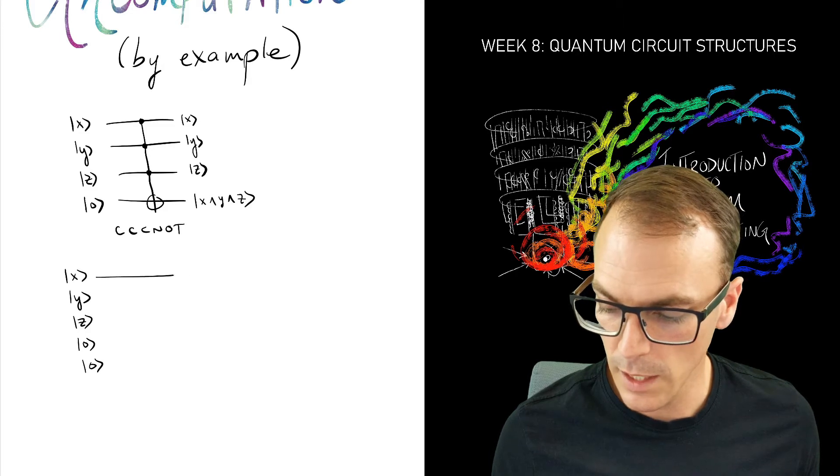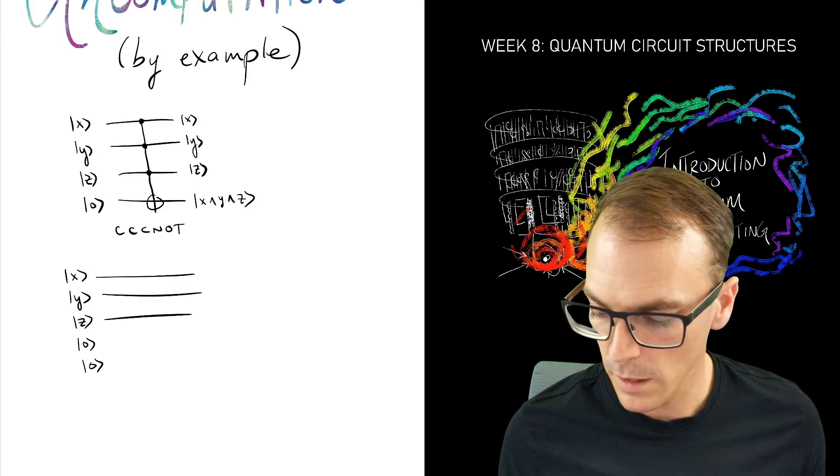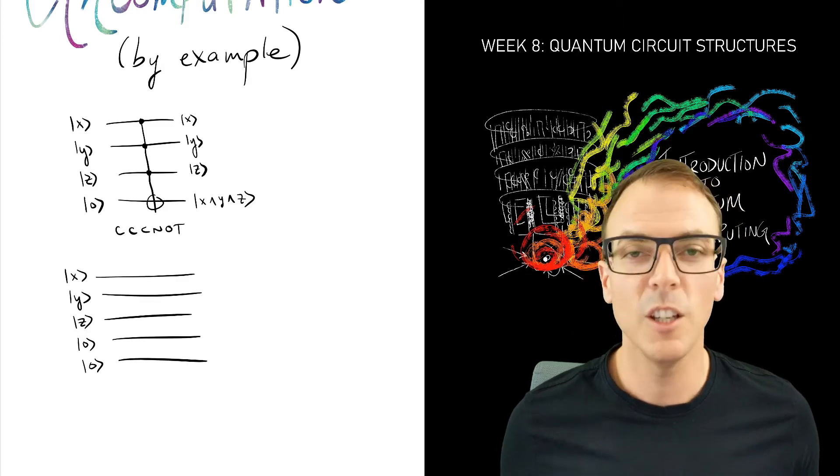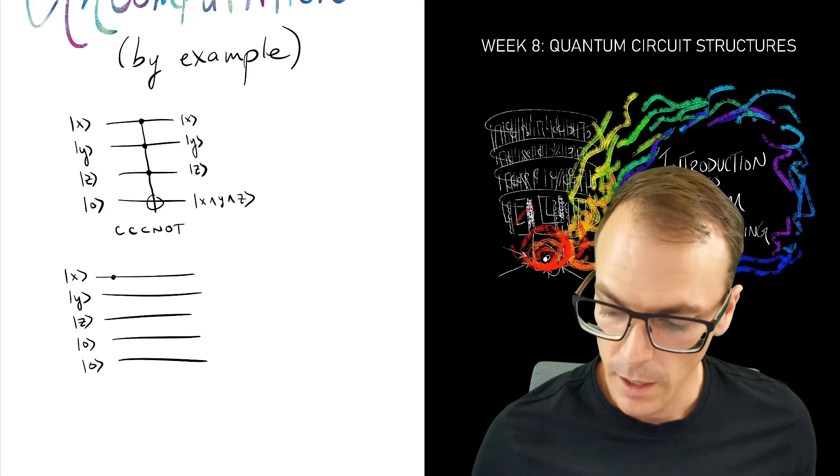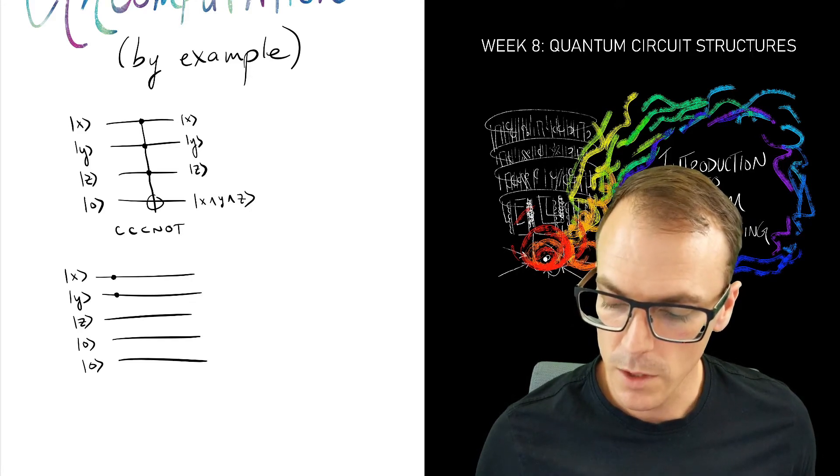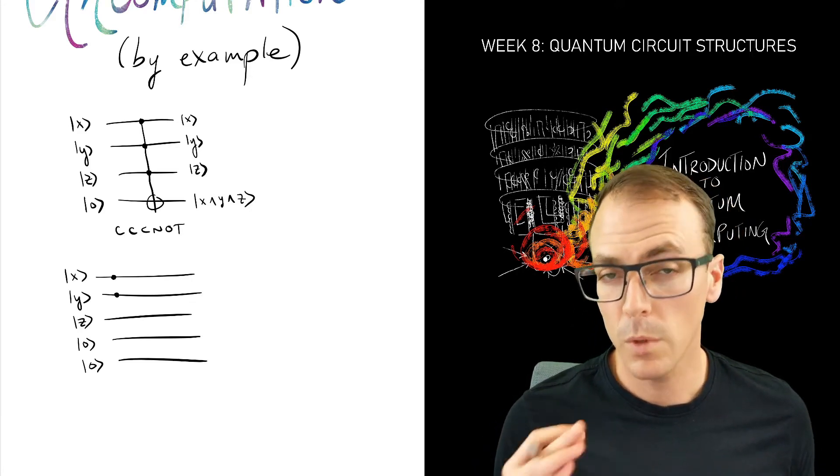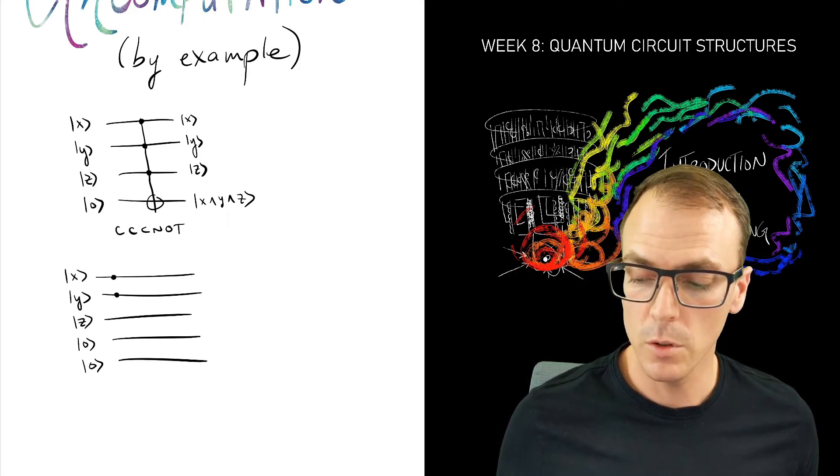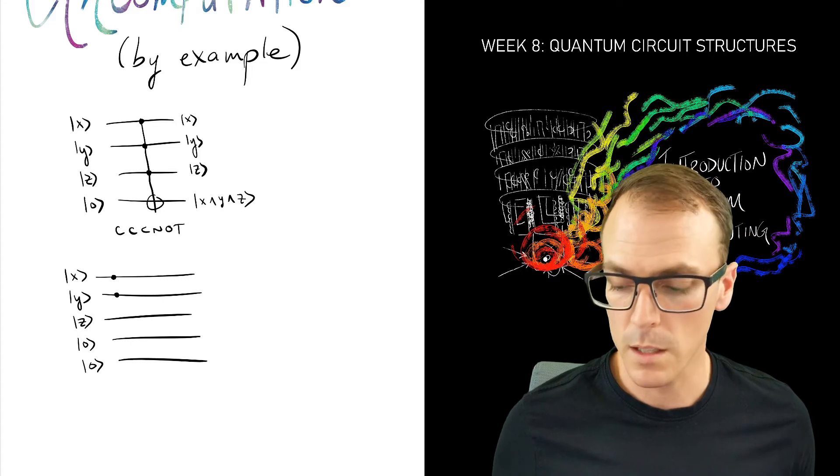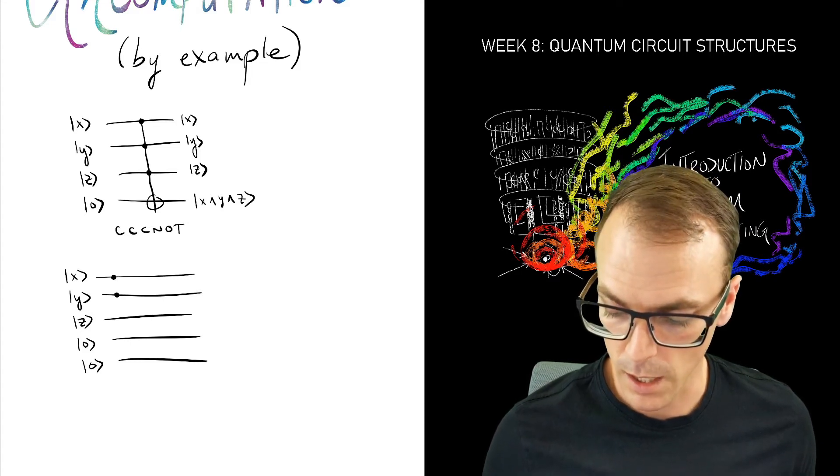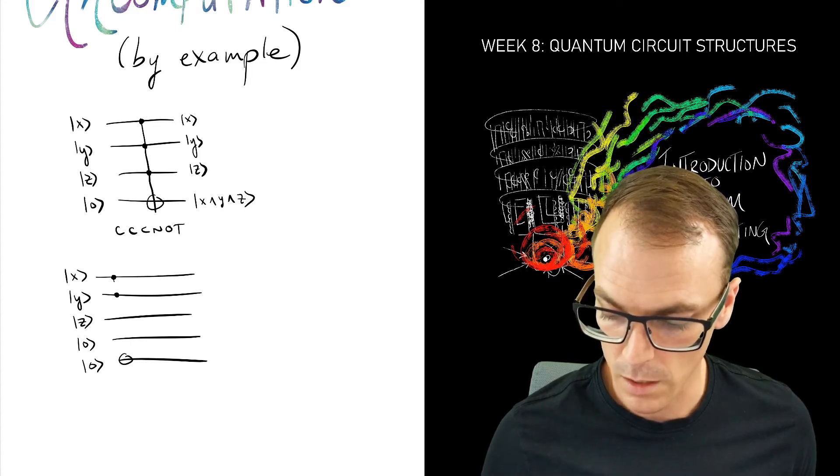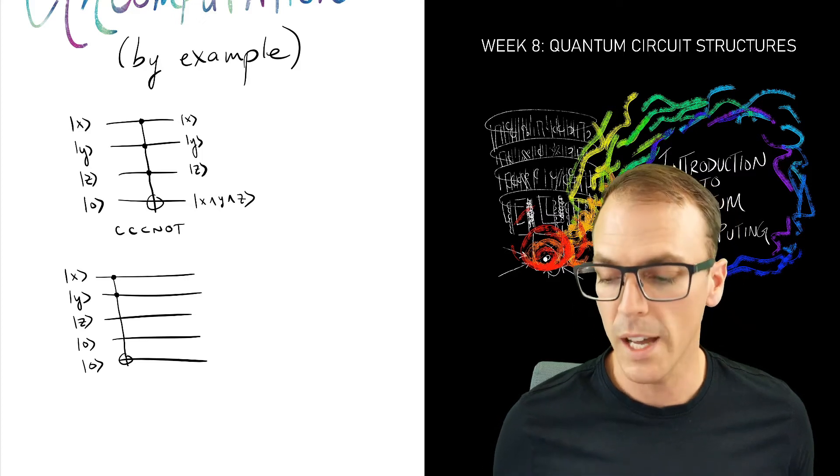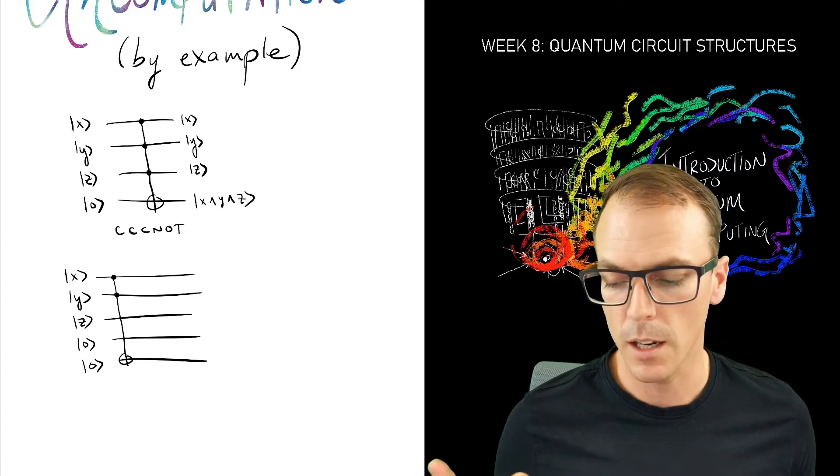However, we need another qubit. How it works is quite simple. We can only interact with three qubits at a time. So if the first two qubits are in the one state, then we can store that knowledge in a scratch qubit.